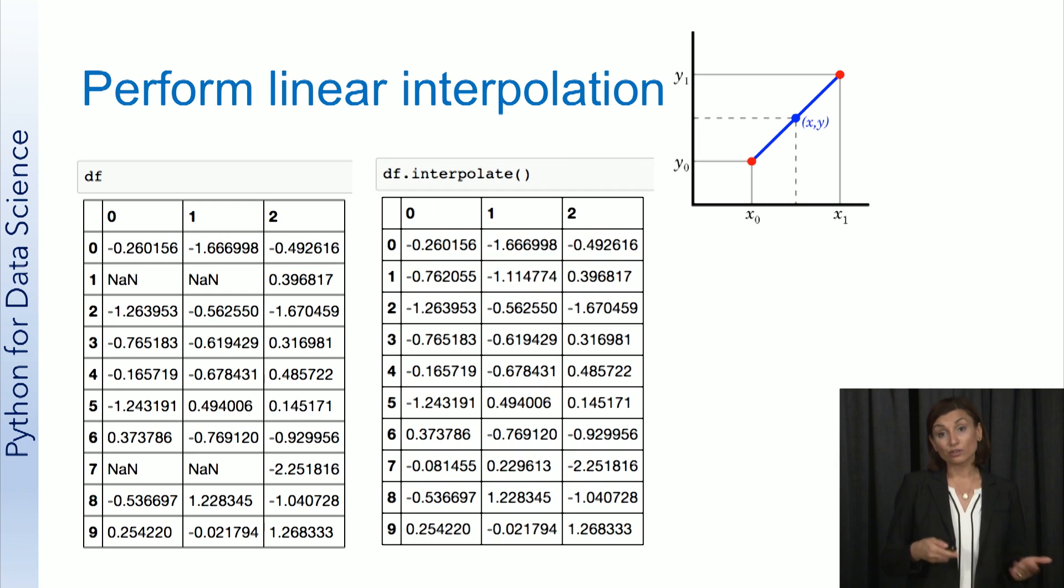You can also interpolate values in both series and data frame objects. The default for interpolate function is linear interpolation, meaning the method tries to fit the values to a curve or line using linear polynomials, like the point x, y in the graphic on this slide. There are other interpolation methods to pick from as well, but we'll leave it at linear interpolation in this introduction class.